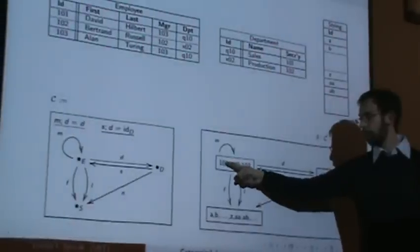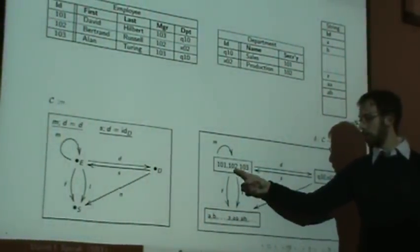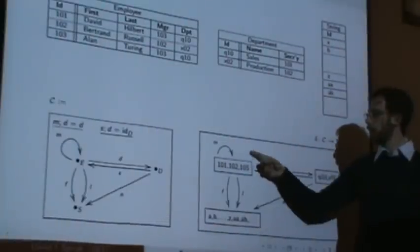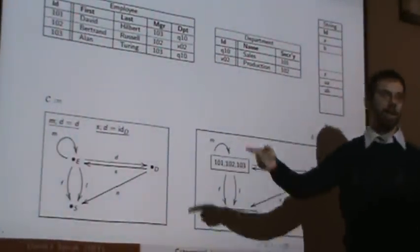So what is a function F, taking 101, 102, 103 to here? Well, it needs to give me three strings, one for 101, one for 102, and one for 103, and first is exactly doing that.